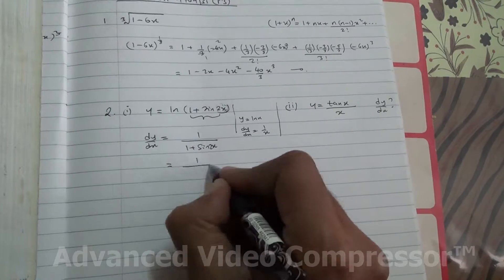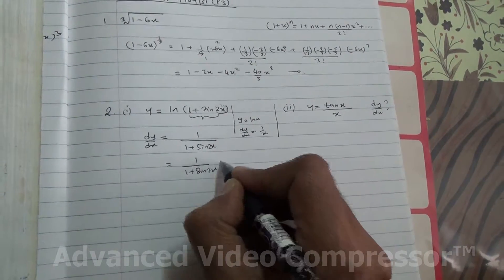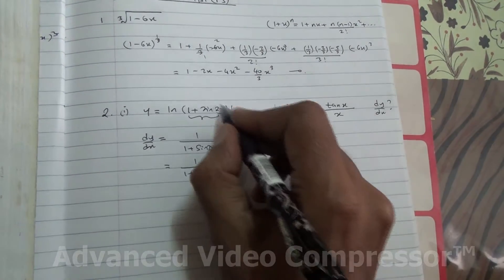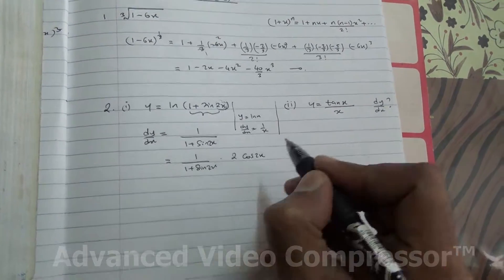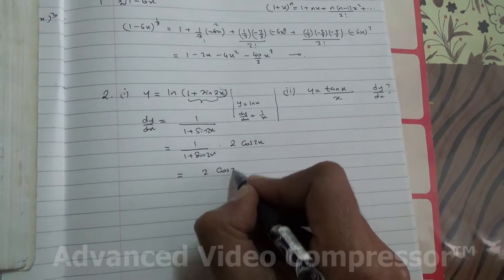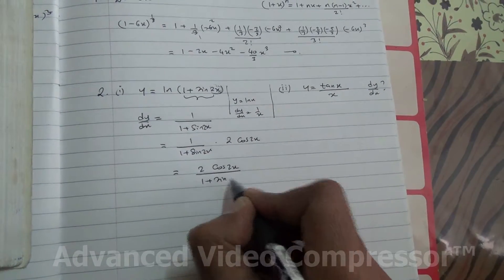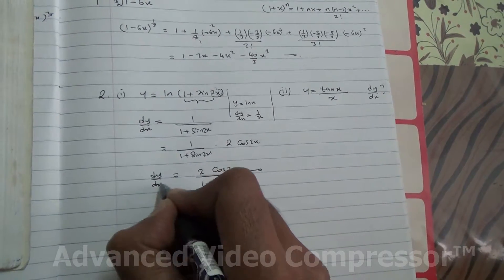So that's going to become then 1 over 1 plus sin of 2x, multiplied by the derivative of the core inside. You're going to differentiate sin to cos of 2x, multiply that, and you're going to end up with 2 cos of 2x divided by 1 plus sin of 2x. And here we are for dy by dx for the first part.